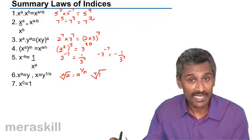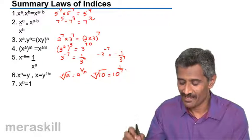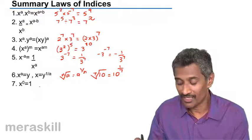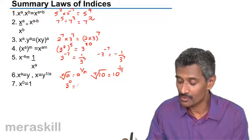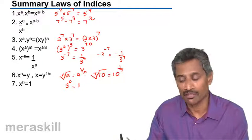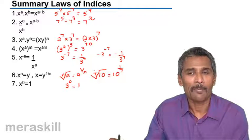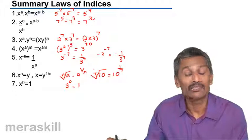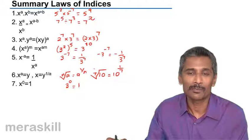And any number raised to zero is one. So three raised to zero is one, two raised to zero is one, one point five raised to zero is one. So that's the summary of the laws of indices. Now let's see how we can apply these laws that we have learned in very simple examples.